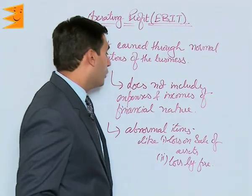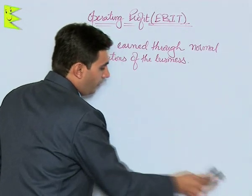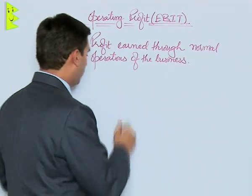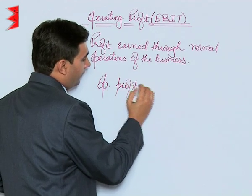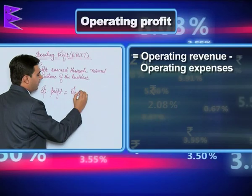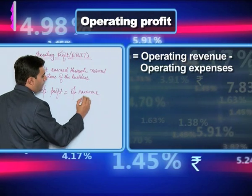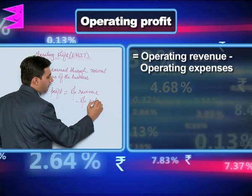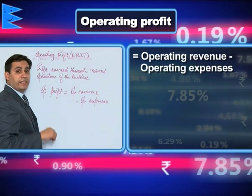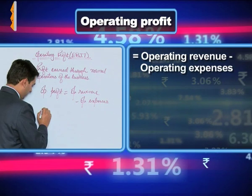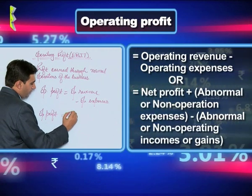So operating profit is equal to operating revenue minus operating expenses. This is the direct formula. There is also an indirect formula: operating profit is equal to net profit plus...